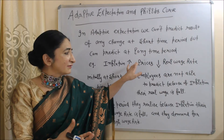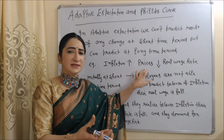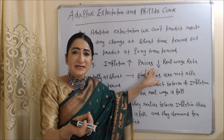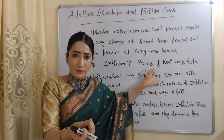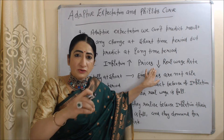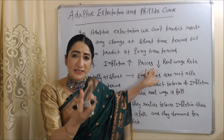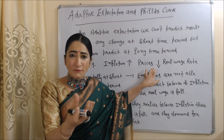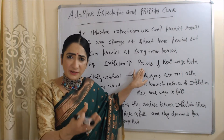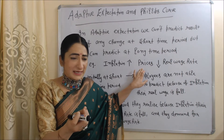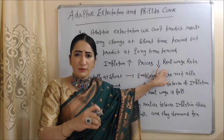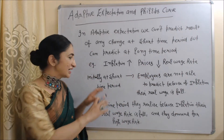When inflation increases, prices increase. When prices increase, the real wage rate of employees falls. The real wage rate basically tells us the purchasing power of employees — how much goods and services we can buy with a particular amount of money. Obviously, when prices increase, we can buy fewer goods and services, so the real wage rate of employees falls.